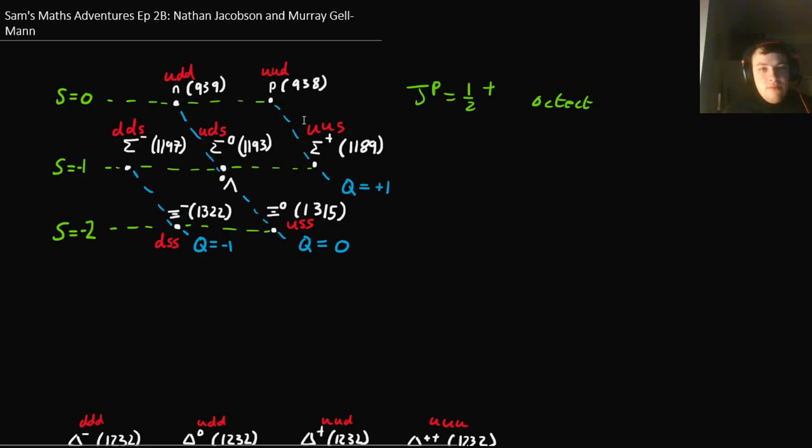And then we have these things arranged in this hexagon. And it's really nice because things in the same row have the same strangeness, which is actually minus one times the number of strange quarks. It's just a convention that was there when it was invented, and is still there now. And along diagonal lines we have the same electric charge. And then we have masses. And all my masses here are written in MeV over c squared.